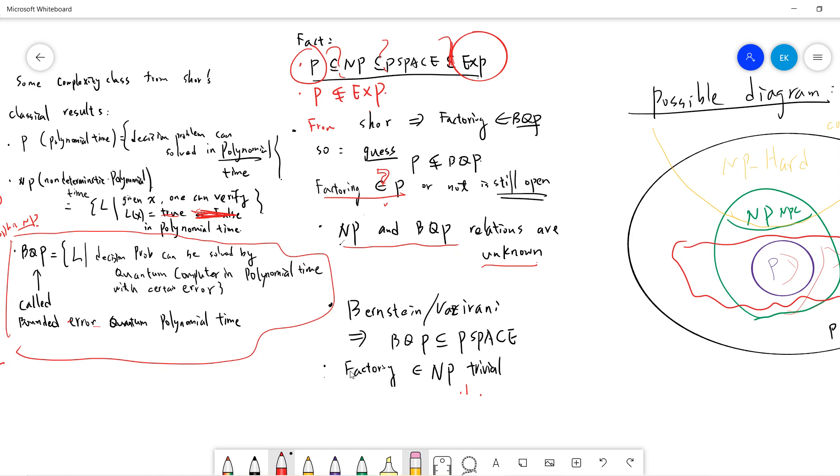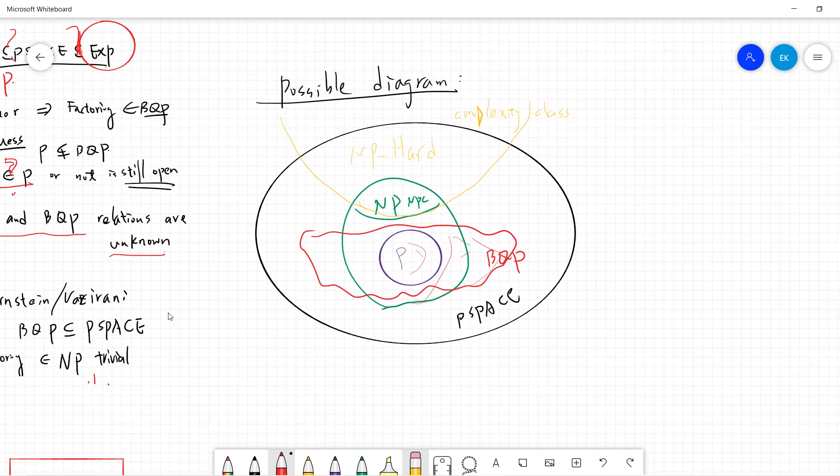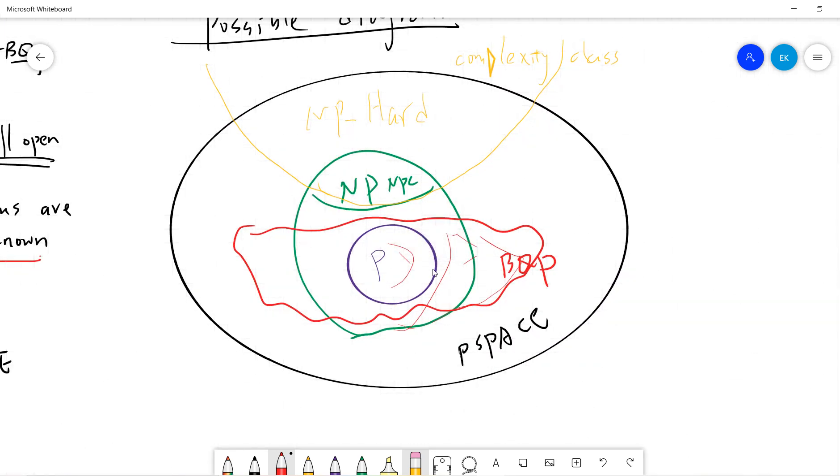So factoring has some natural property that is both NP and co-NP.